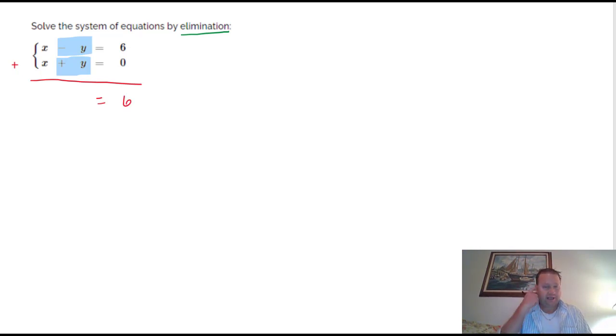And over here on the left, I have x and x which makes 2x. But the minus y and the plus y turn into zeros. And that's where the word elimination comes from is we just eliminated the y values. And so, I just have this equation which says 2x equals 6. And if I divide by 2, I get x is 3.